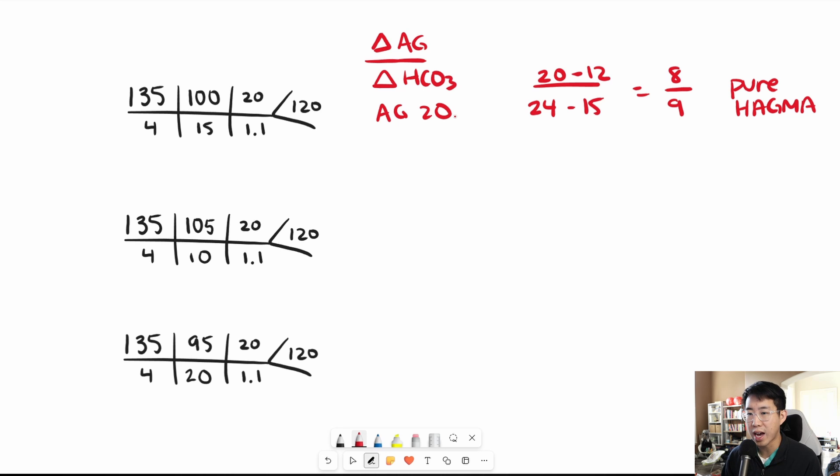In this case we have an anion gap again of 135 minus 115, so we have an anion gap of 20. We do 20 minus a normal anion gap of 12, and then 24 minus the patient's bicarb, and this is going to get us a value of 8 over 14. This one is telling us that there is both a high anion gap metabolic acidosis as well as an additional non-anion gap metabolic acidosis, as the patient's bicarb is lower than expected based on how much their anion gap has changed.